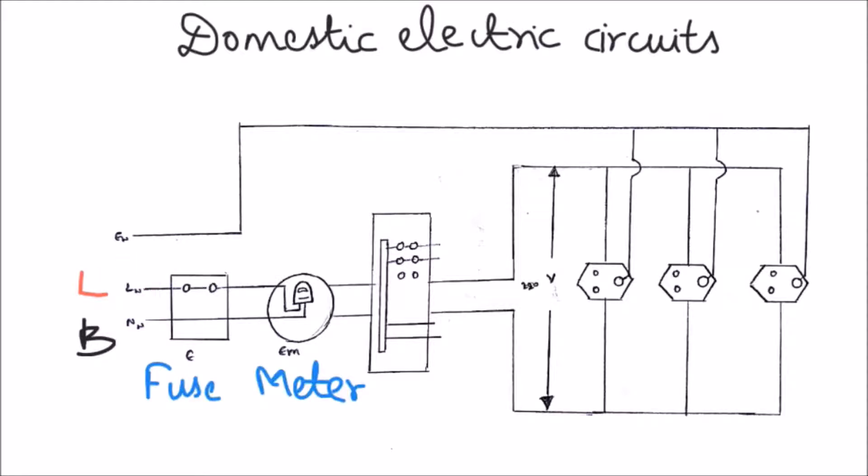The live wire and neutral wire pass through an electric fuse and meter before connecting to the domestic appliances. The fuse breaks the circuit and avoids damage to electric appliances whenever there is a high abrupt current flowing in the circuit.